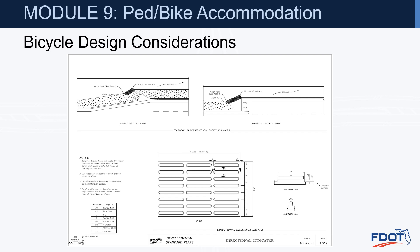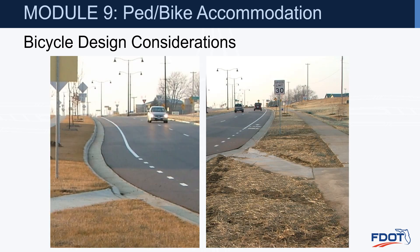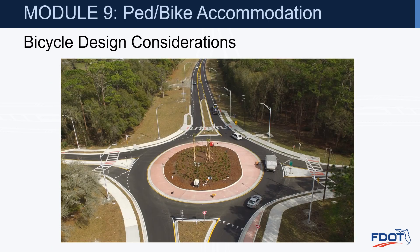This exhibit from Developmental Standard Plans Index D 528-001 gives information for the directional indicator. Here are a couple of pictures of a project with bike ramps. The picture on the left shows the exit ramp and the skip-dash pavement marking prior to that ramp, and the picture on the right shows the ramp coming back on, taking the bicyclist back onto the bike lane on the roadway. You can see where the bike lane terminates with the taper of the curb and gutter and leads onto a bike ramp with the wider sidewalk going around the roundabout.